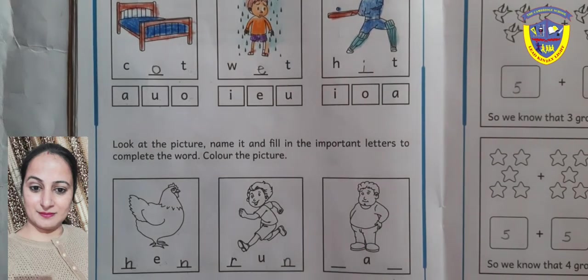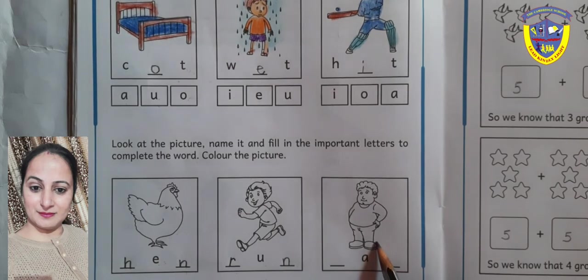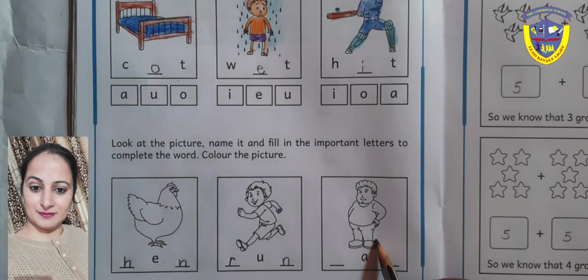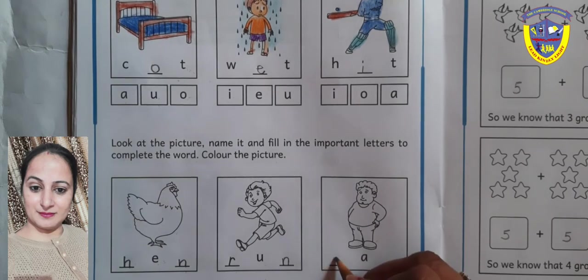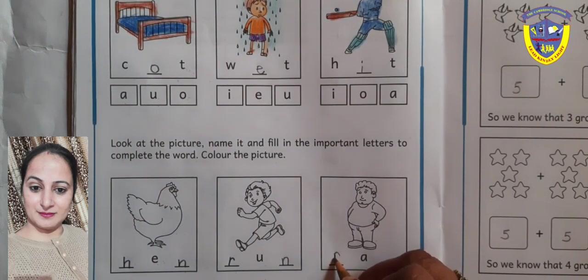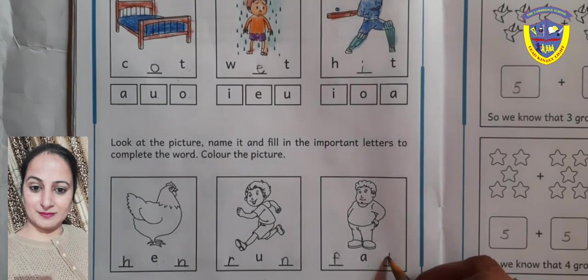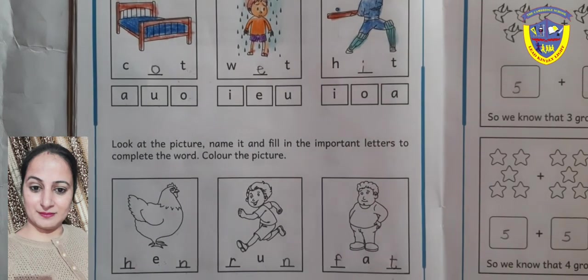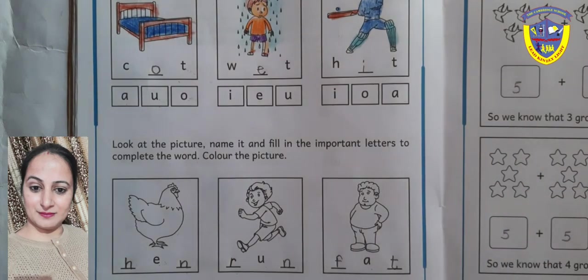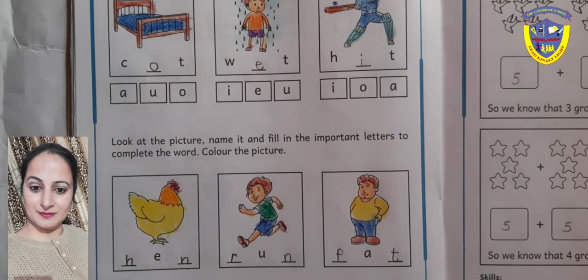The important letters are 'r', 'u', and 'n'. Next picture is 'fat' — f-a-t, fat! Now complete the pictures with color. In the same way you have to complete this page. Okay beta, bye bye!